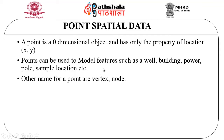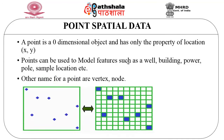First let us look at the point spatial data type. A point is called a zero-dimensional object and has only the property of location, that is x, y. Points can be used to model features such as wells, buildings, people, power pools, and sample locations. The other names for a point are vertex or node. Here there are various points being plotted on the screen, and also represented on a grid or in a matrix form.